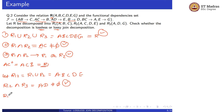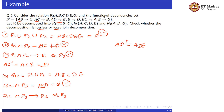Now let us check the third condition: R12 intersection R3 must determine R12 or R3. R12 intersection R3 = AD. Taking the closure of AD: from AD → E we get ADE, and from E → G we get ADEG. We can see A, D, G which is our R3. So R12 intersection R3 determines R3, and the third condition is satisfied.